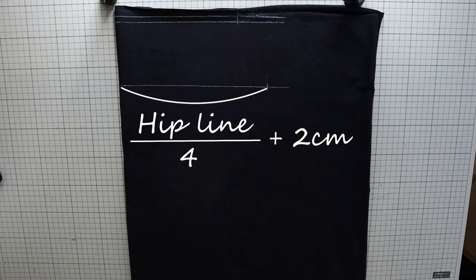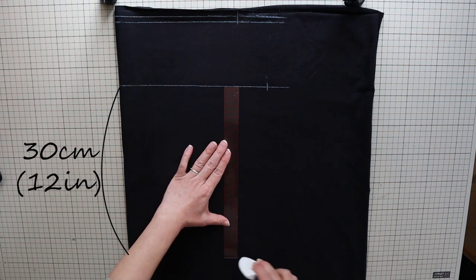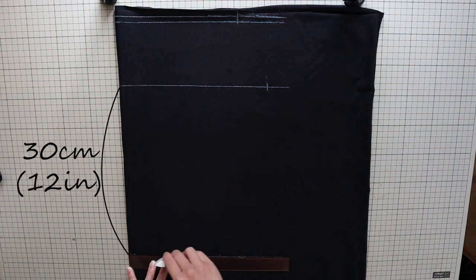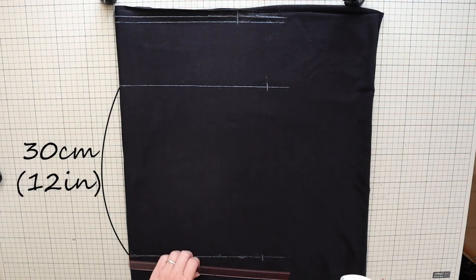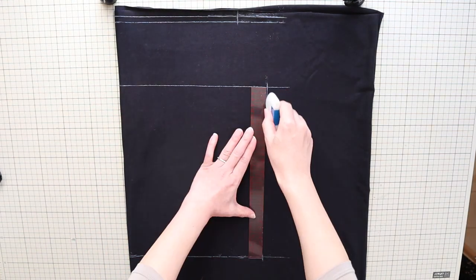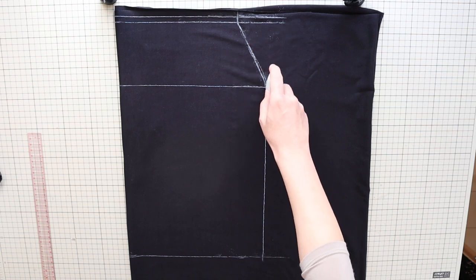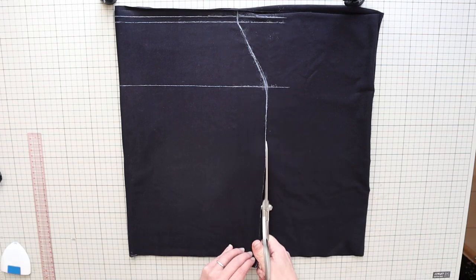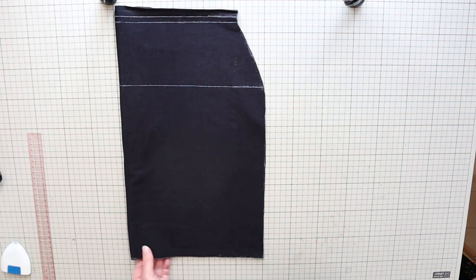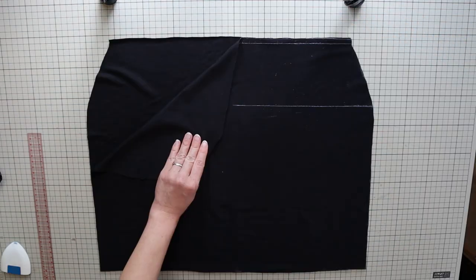From this line, measure 30 centimeters or 12 inches and mark the same measurement as above. Now connect all of the marks on the lines. And smooth out this top area so there's no sharp corner. Cut along the outline and you have two identical panels.